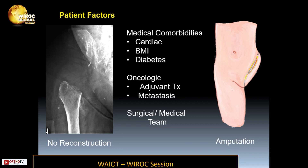Patient factors include medical comorbidities such as cardiac disease, obesity, and diabetes. Oncologic factors include adjuvant treatment and the presence of metastatic disease. The surgical and medical team must be well-trained, and oftentimes no reconstruction or amputation is the only option.